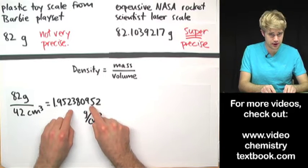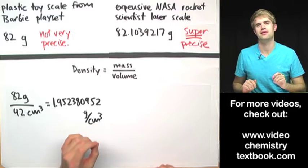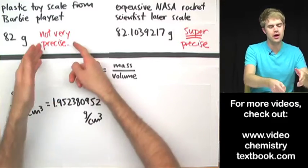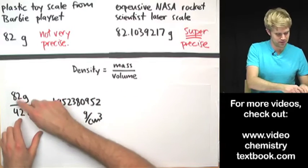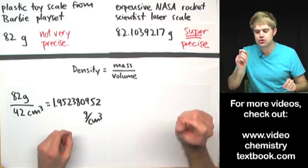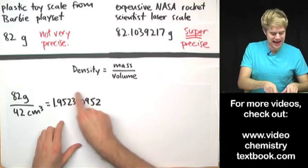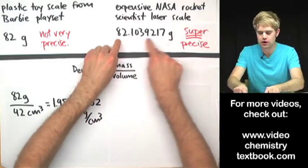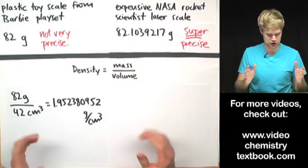Now check out this answer and check out the numbers that I started with. This is a problem and here's why it's a problem. Because I started with these two numbers that were not very precise. I measured both of these with plastic science equipment from the Barbie playset. But then the answer that I got is super, super precise or at least it looks super precise.